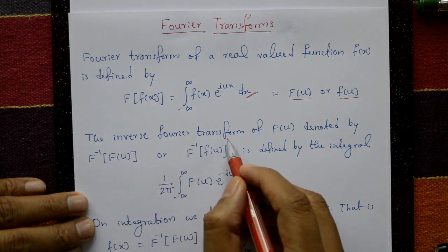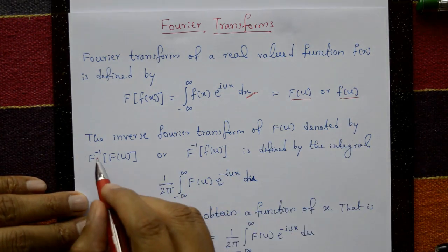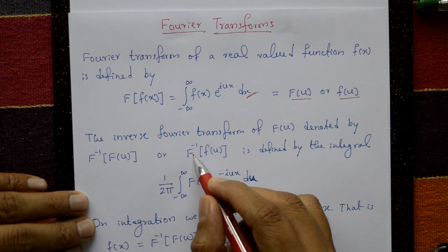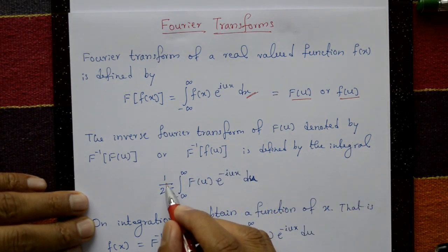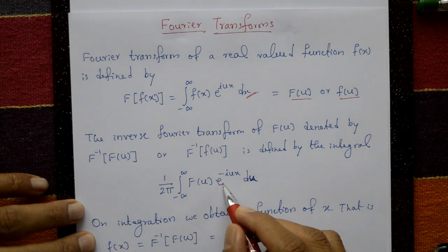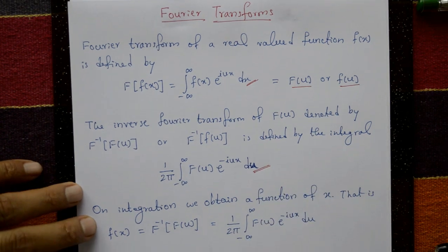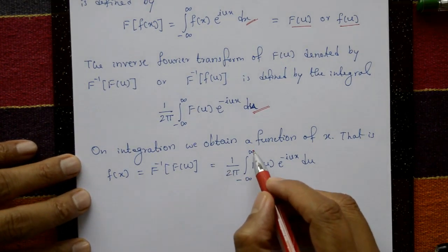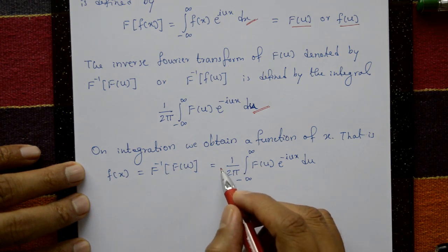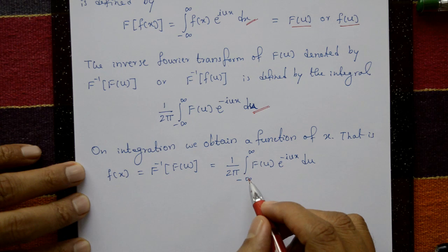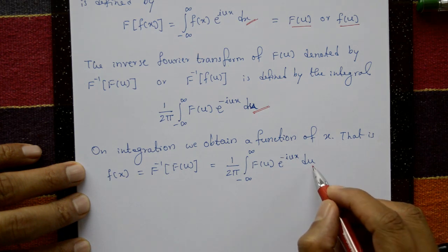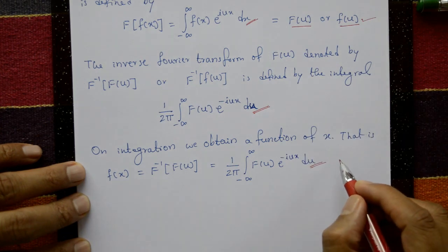Now inverse. The inverse Fourier transform of F of u, denoted by F inverse of F of u, is defined by the integral 1 upon 2 pi, integration from minus infinity to plus infinity of F of u times e to the power minus i u x with respect to u. On integration we obtain a function of x: f of x equals 1 upon 2 pi times the integration from minus infinity to plus infinity of F of u times e to the power minus i u x with respect to u.